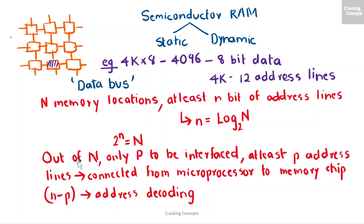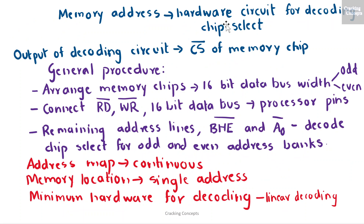However, if out of the N locations only p memory locations need to be interfaced, then the least significant p address lines out of the available n lines can be directly connected from the microprocessor to the memory chip. While the remaining n minus p higher-order address lines may be used for address decoding, that is as inputs to the chip selection logic. The memory address depends upon the hardware circuit used for decoding the chip select, and the output of the decoding circuit is connected with the CS pin of the memory chip.